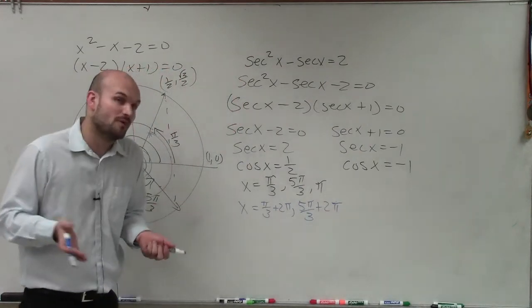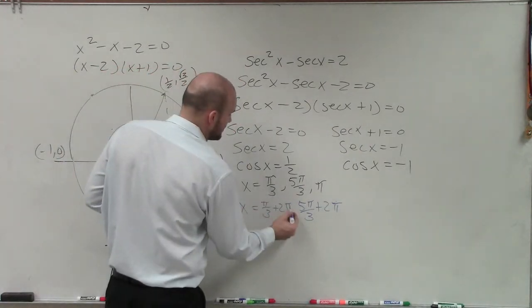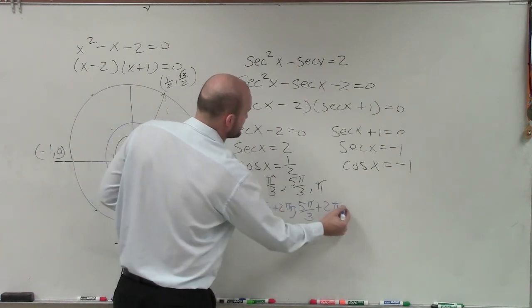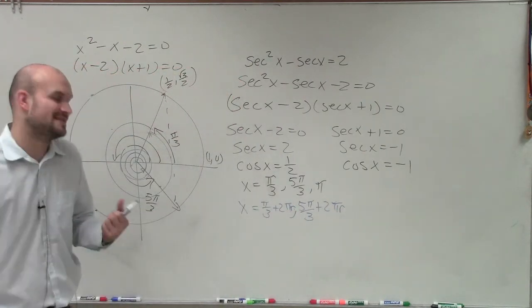But we can add more than 2 pi more than once. So I need to make sure I add my variable, which in this case, I'll use r. And that is just telling us we can add 2 pi as many times as we would like to.